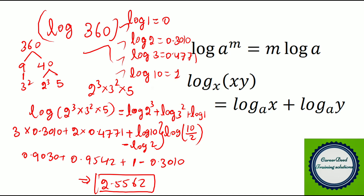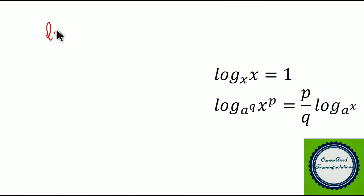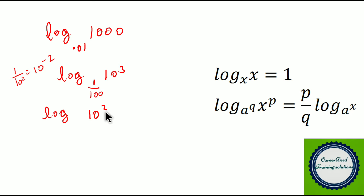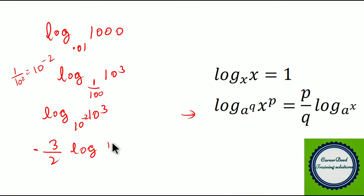Question number 5: log of 1000 to the base 0.01. Log 1000 can be written as log of 10 cube. And 0.01 is 1 by 100, which is 1 by 10 square, equivalent to 10 power minus 2. So we write log of 10 cube to the base 10 power minus 2. Using the last property, this equals P by Q into log 10 to the base 10, which is 3 by minus 2 into 1, giving minus 3 by 2 as our answer.